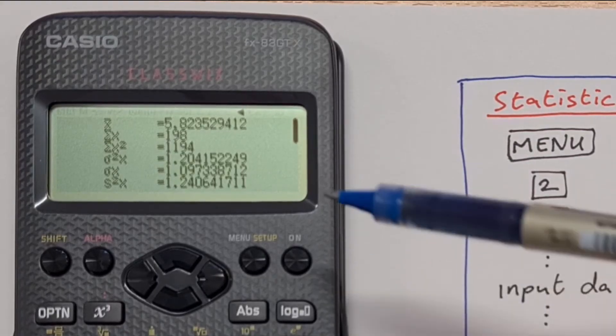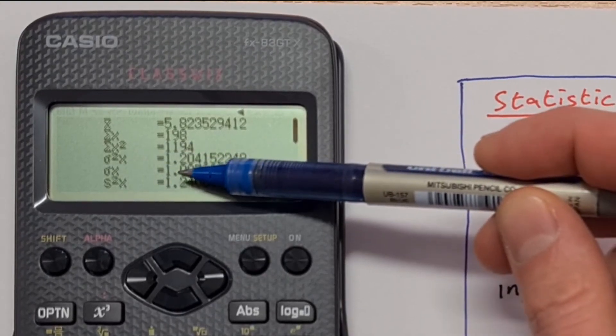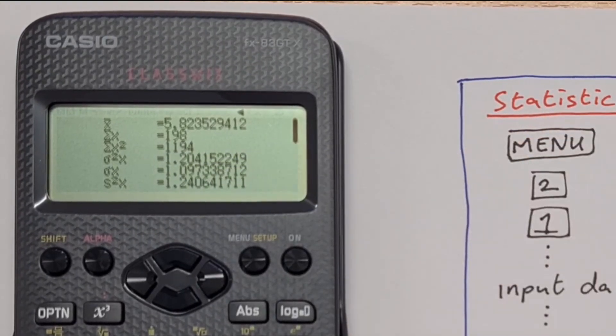Some other important ones there. The standard deviation is this one here, sigma x. That's 1.097. That's the standard deviation. That is how far on average each bit of data is from the mean.